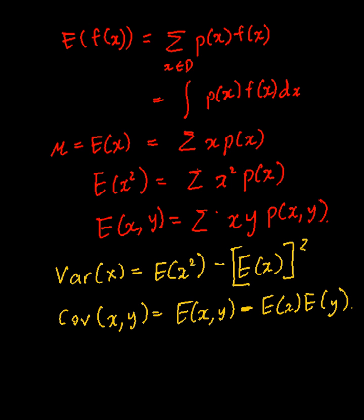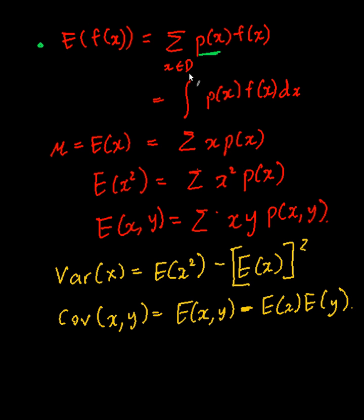In this video, I'm going to go through how to calculate expectations, variances, and covariances given a probability distribution. Let's start with the definition of expectation: the expectation of any function is simply the probability multiplied by the function, summed over all possible values of x, where x is in some domain.